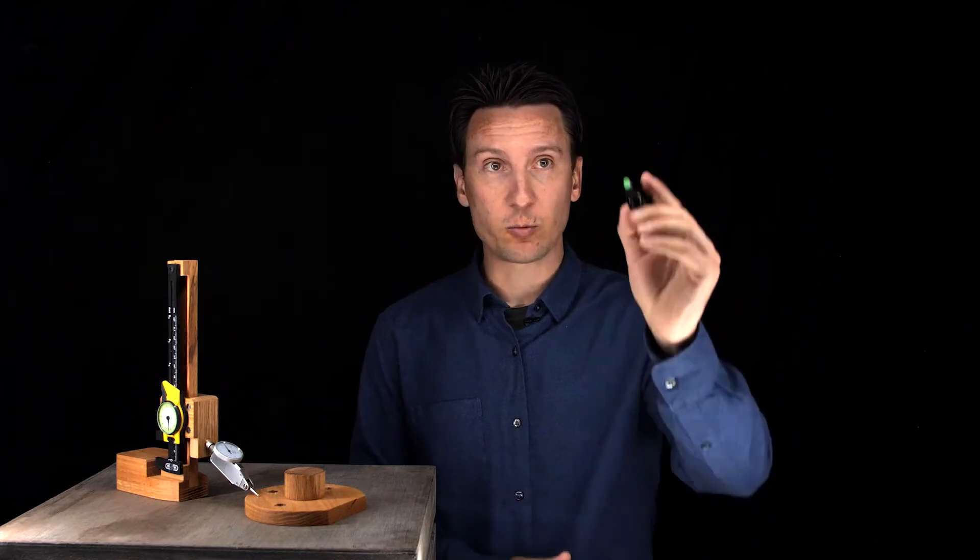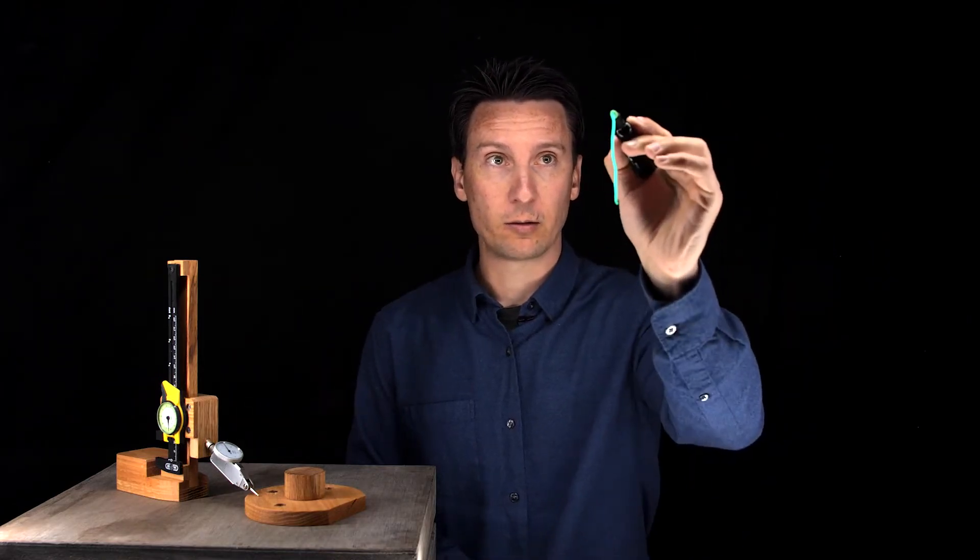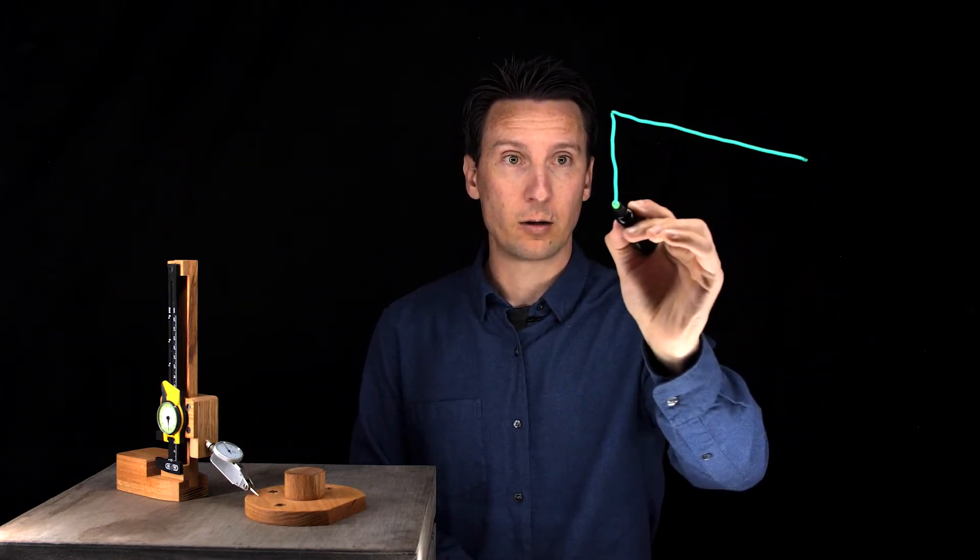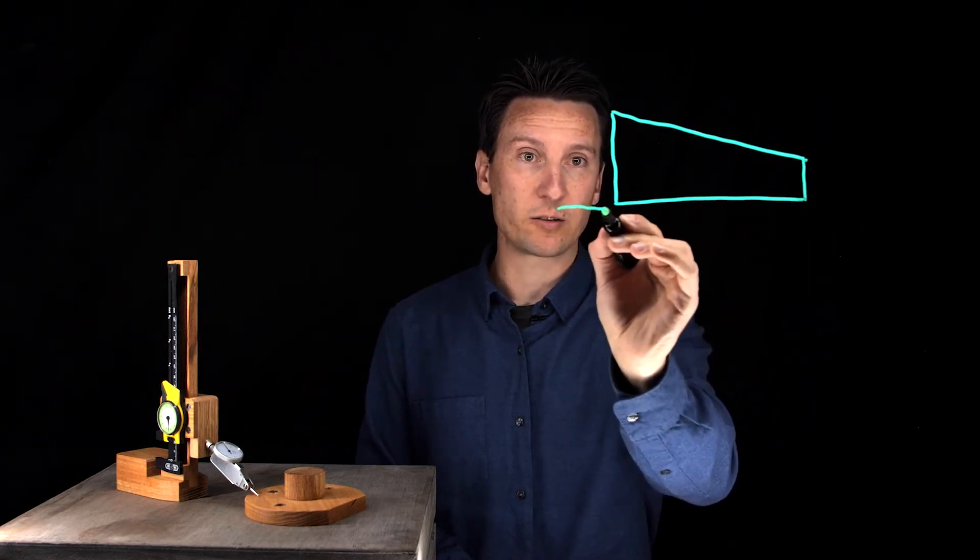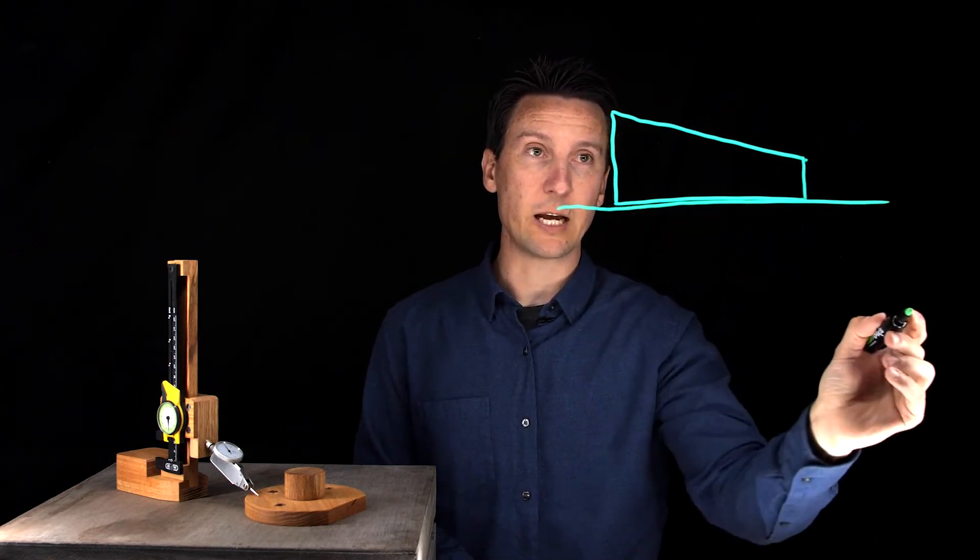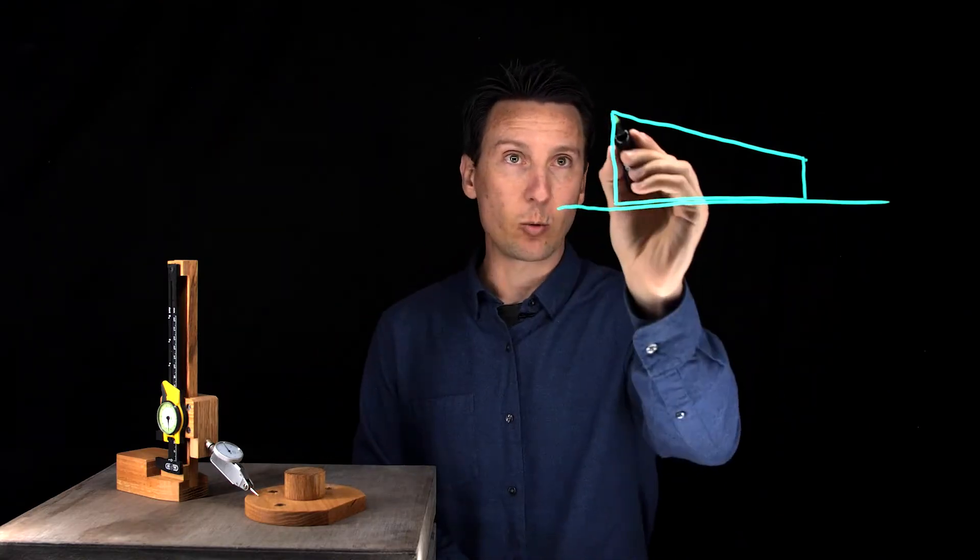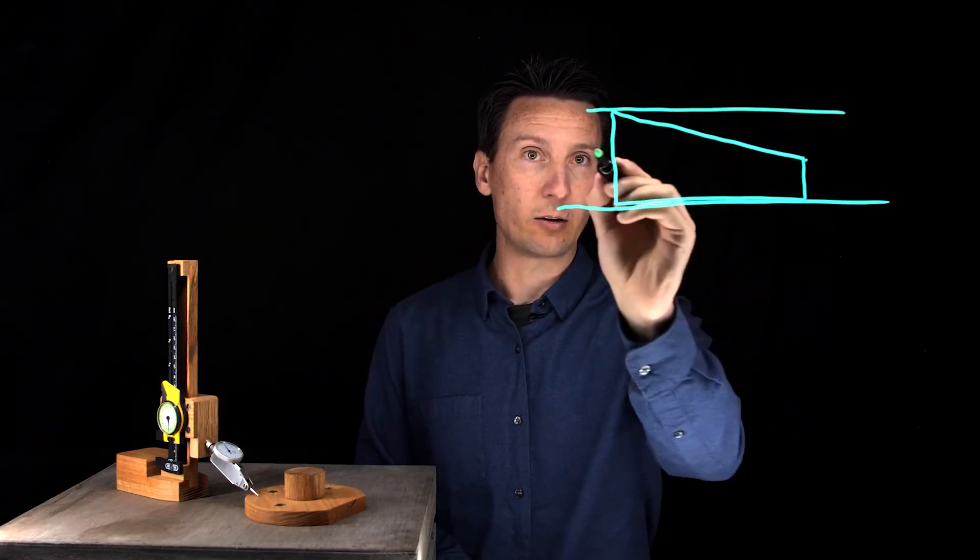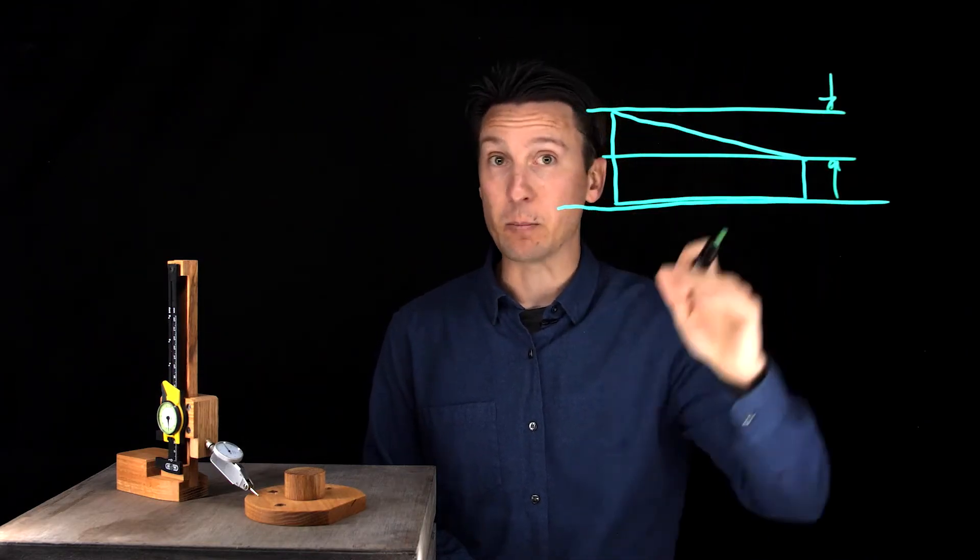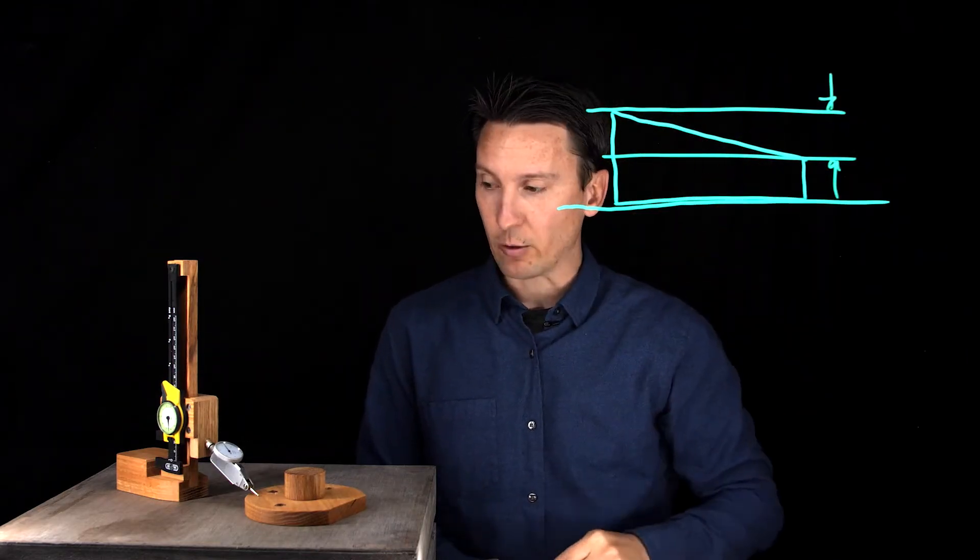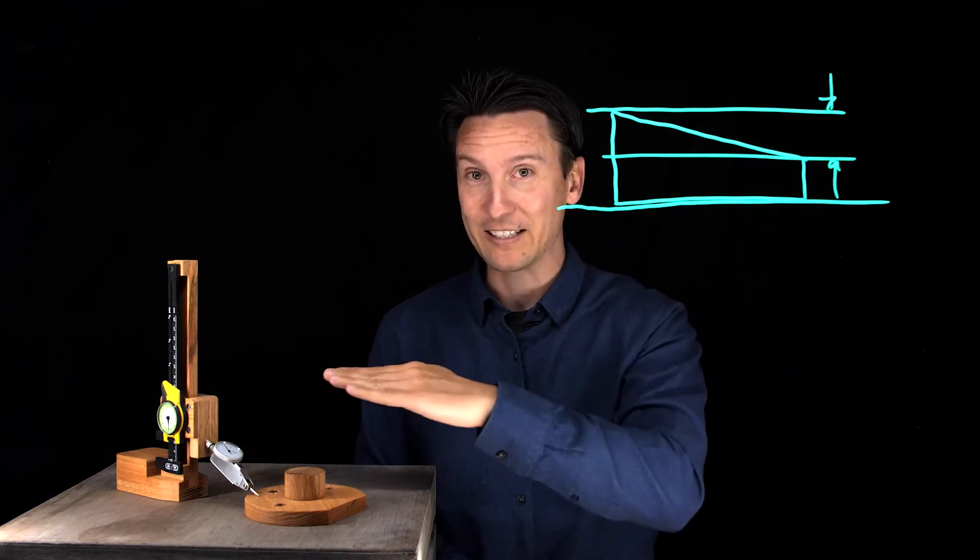Now what you might be noticing here is I'm not actually measuring flatness. I'm actually measuring parallelism. Because let's say that this surface was tilted and you have it resting down on this bottom surface, it will treat it like this as a datum. And your dial indicator will give you a reading from here to here. Remember that's not the flatness. The flatness has to be best fit to the surface.